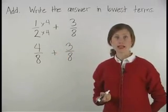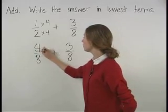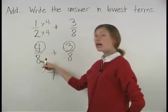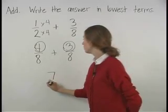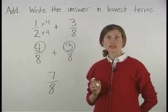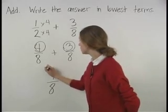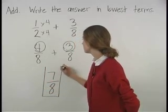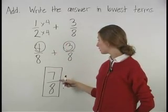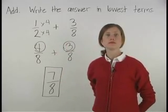Now we're adding like fractions, so we simply add the numerators, four plus three equals seven, and keep the same denominator, which is eight. Notice that seven-eighths is in lowest terms, so it's our final answer. This means that one-half plus three-eighths equals seven-eighths.